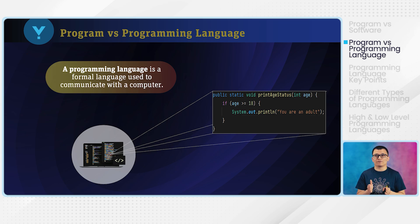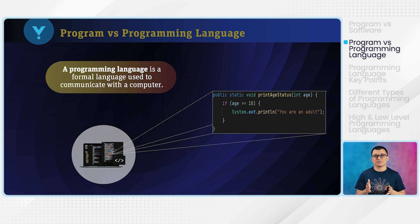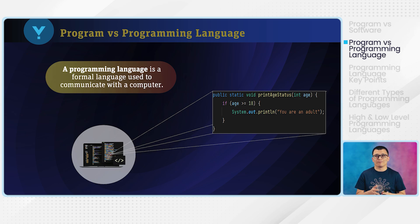A programming language is basically a formal language. It is used to communicate with computers. Since it's a formal language, it provides a way for humans to communicate with computers and create software by specifying the design, actions, and computations. Every programming language has a set of rules and syntaxes to write the program. The rules and syntax of one programming language can be different than another programming language.